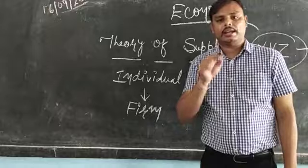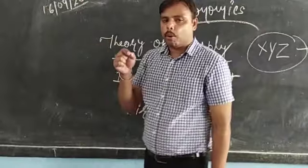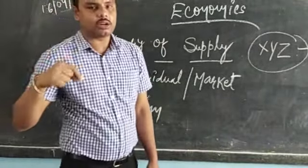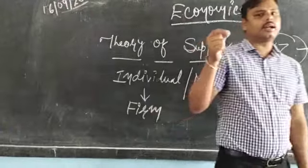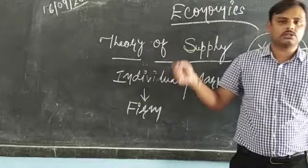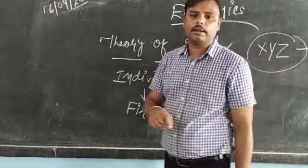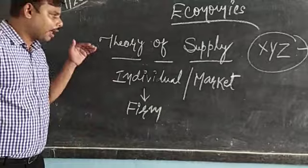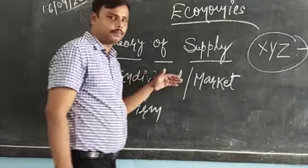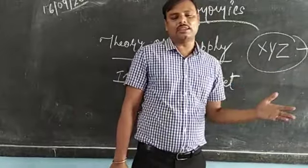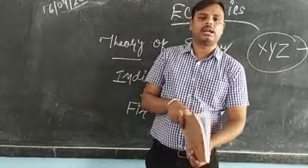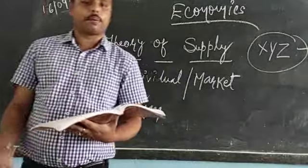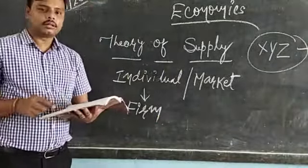The more price increases, the more supply will be there. In theory of demand, the inverse relation meant that whenever the price drops, more demand comes out. But here it is just the opposite — when the price increases, the supply increases. So what type of relation is there between supply and price? It is a positive relation — the positive relation between the price of the product and supply of the product.